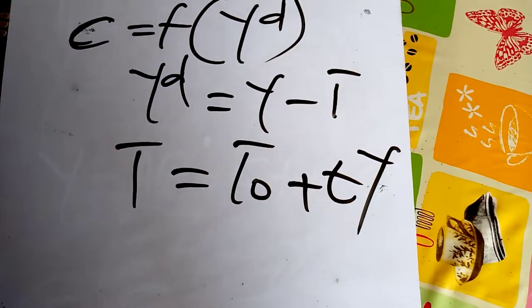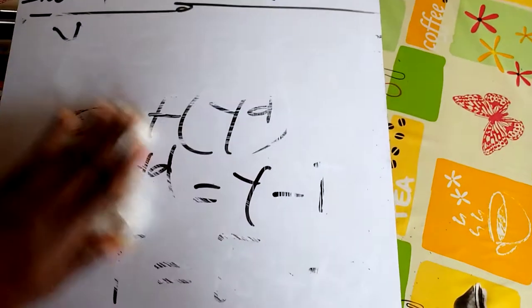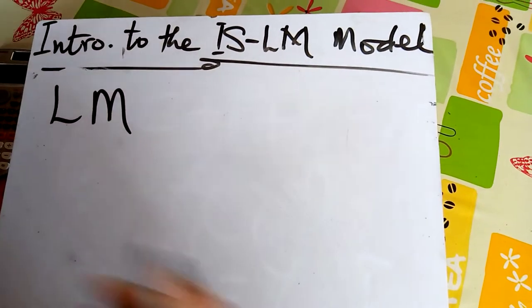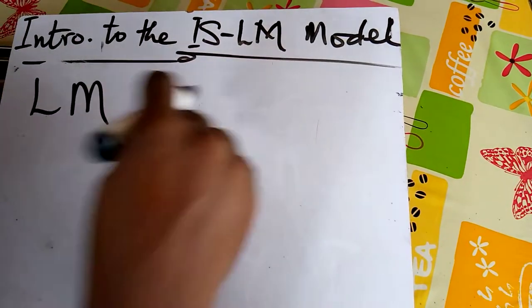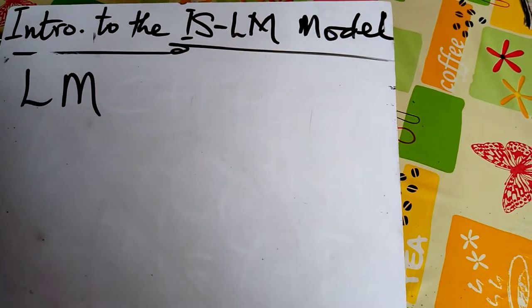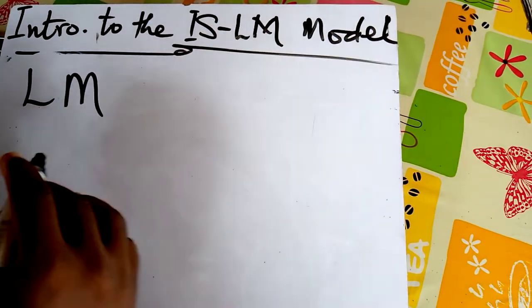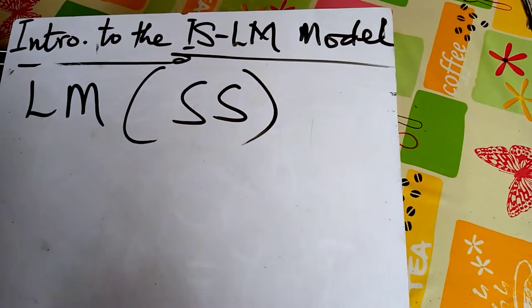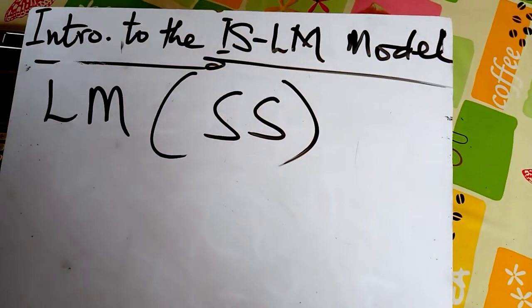Now going to the LM side, which is also part of the model. LM stands for liquidity preference and money supply, and this happens in the money market. The LM is a curve showing all available money for investment, making it the supply side — whereas the IS is on the demand side.